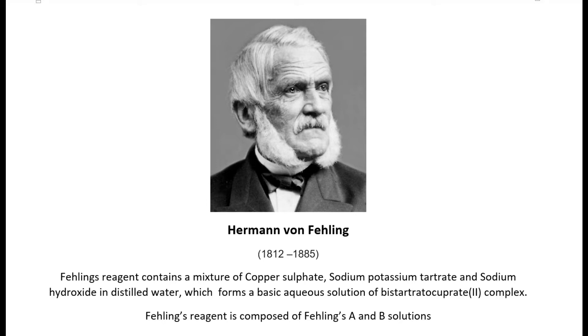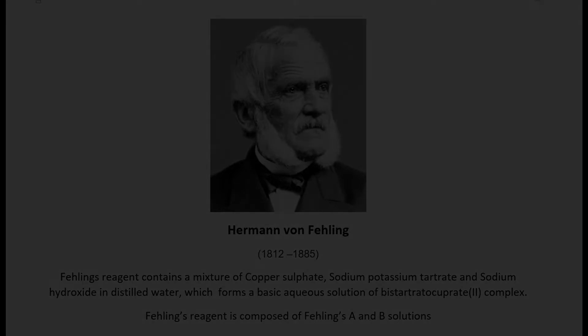Therefore, Fehling's reagent comes in two separate solutions: Fehling-A, which is a solution of copper sulfate, and Fehling-B, which contains a mixture of sodium hydroxide and sodium-potassium tartrate. The two solutions are mixed in equal amounts just before a test is performed.